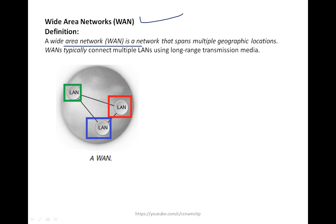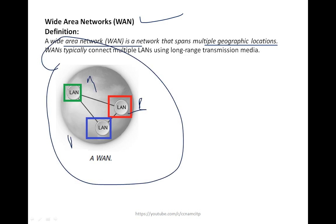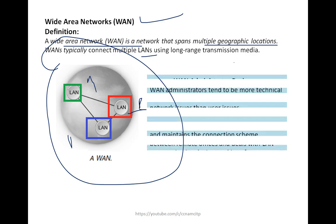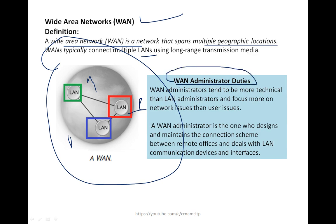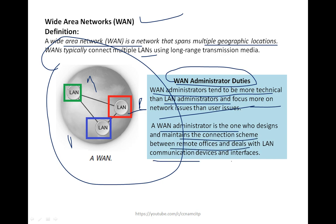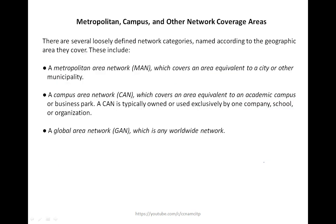A WAN (Wide Area Network) is a network that spans multiple geographic locations — for example, offices in Bangalore, Mumbai, and Kolkata connected together. WANs typically connect multiple LANs using long-range transmission media. WAN administrators tend to be more technical than LAN administrators, focusing more on network issues than user issues. A WAN administrator designs and maintains the connection scheme between remote offices and deals with long-distance communication devices across the enterprise.